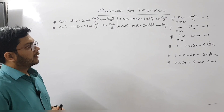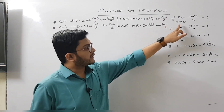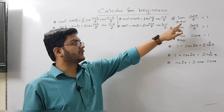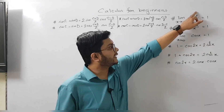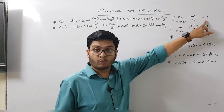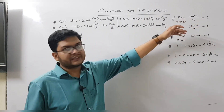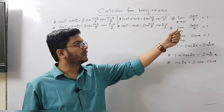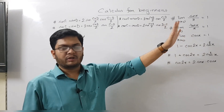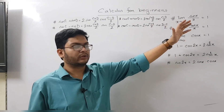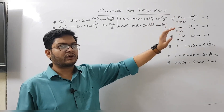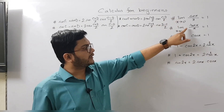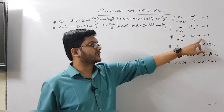The first formula says: limit x tends to 0, sine x divided by x is equal to 1. Here x is just a placeholder — the variable — so instead of x it could be theta, y, or any variable; this holds true for every variable. Similarly, limit x tends to 0, tan x by x equals 1, and limit x tends to 0, cos x equals 1.